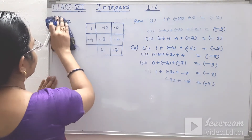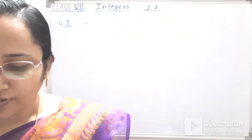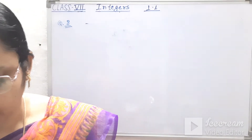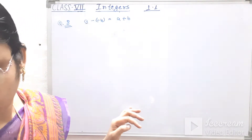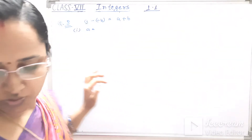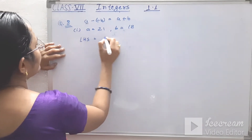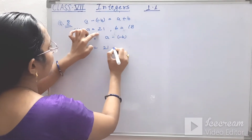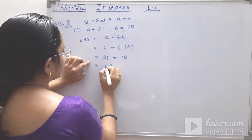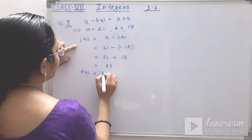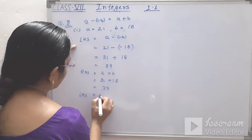Next, question number 8: verify a minus minus b equals a plus b for the following values. First: a equals 21 and b equals 18. Left hand side: 21 minus minus 18 equals 21 plus 18 equals 39. Right hand side: a plus b equals 21 plus 18 equals 39. Left hand side equals right hand side — it is proved.